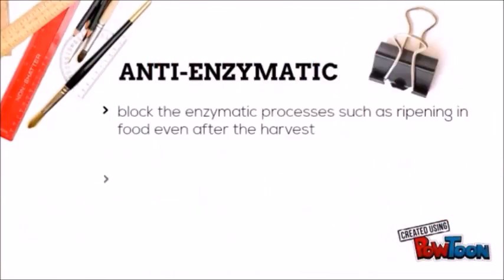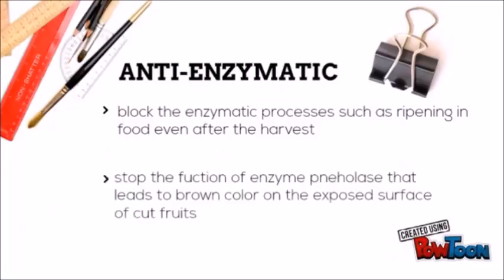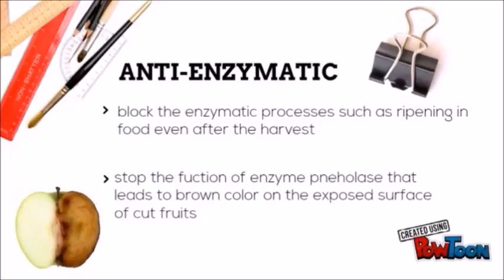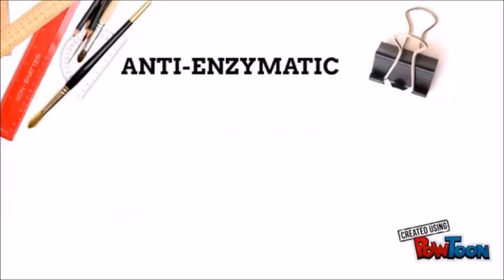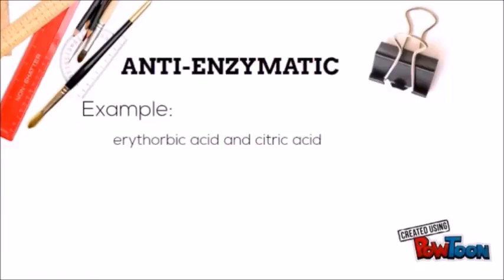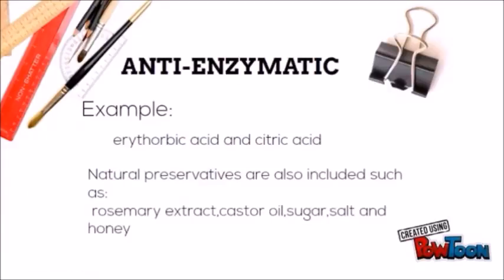The last type is anti-enzymatic preservatives. These are used to block enzymatic processes such as ripening in food even after harvest. They stop the function of the enzyme phenolase, which leads to brown discoloration on the exposed surface of cut fruits. Examples of anti-enzymatic preservatives are erythorbic acid and citric acid.